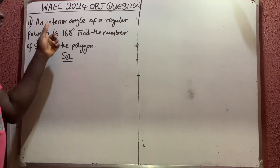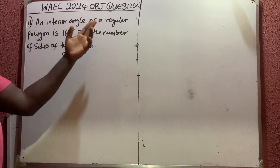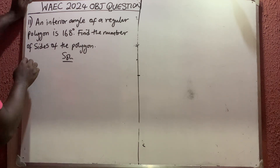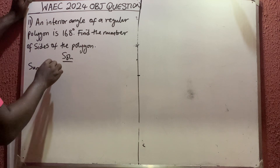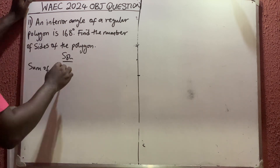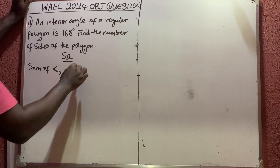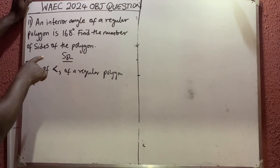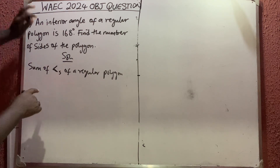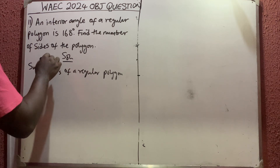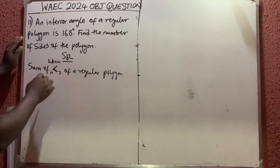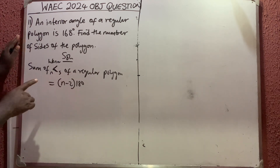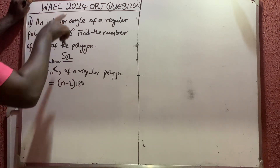They said one interior angle of a regular polygon is 168, and we should find the number of sides. First, you should know the formula: the sum of interior angles of a regular polygon is given by (n minus 2) times 180. That is the formula for the sum of interior angles.